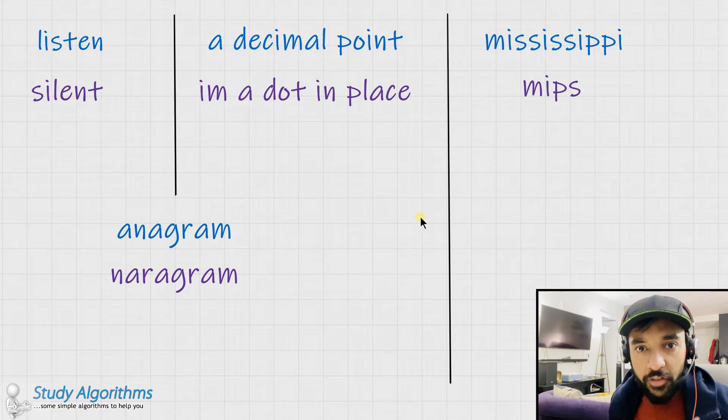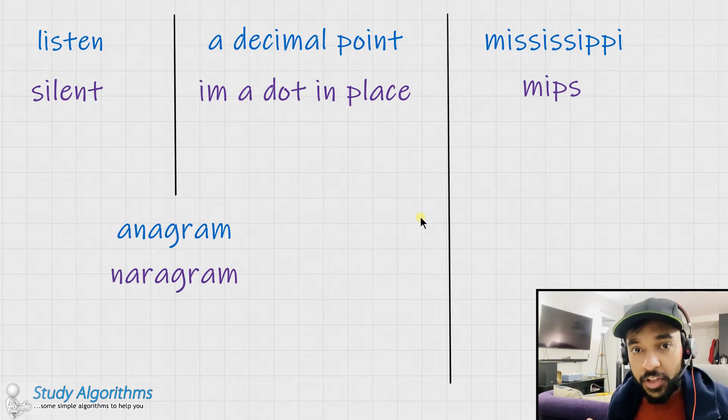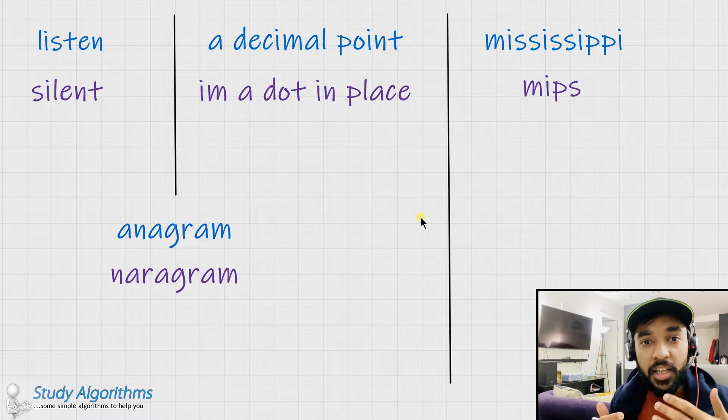To start off, we must first understand the problem statement. The problem talks about anagrams. So what is an anagram? Two strings are simply said to be anagrams of each other if one of them can be jumbled up or shuffled up in a way and converted into the second string.